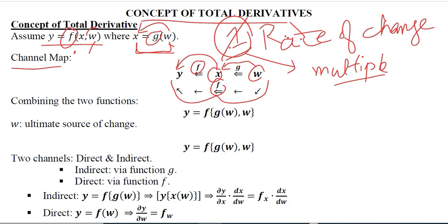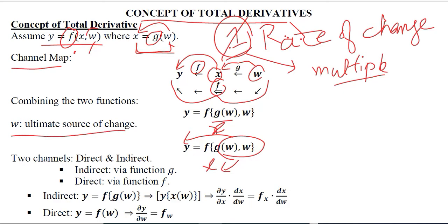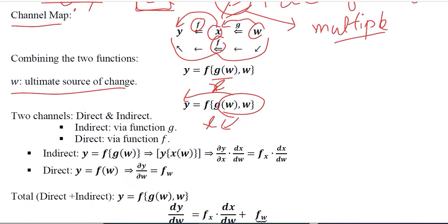I can combine them in this way: instead of x, I am writing its given function, which is x = g(w). If I do this, I understand that w is the main variable which is affecting x as well as y. So w is the ultimate source of change in the given function.